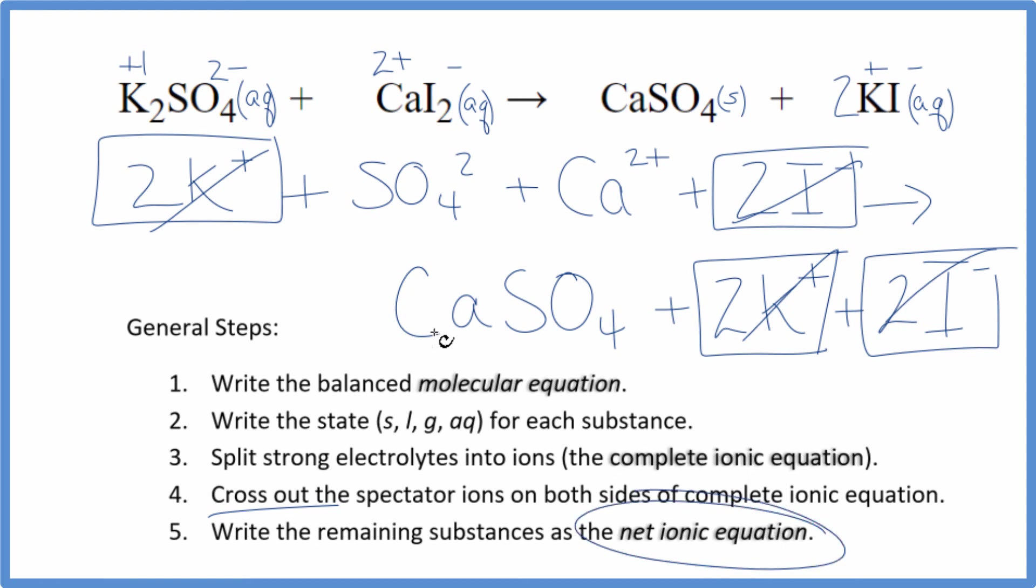What's left, that's the net ionic equation for potassium sulfate plus calcium iodide. I'll clean it up, write the states. We'll have our net ionic equation.